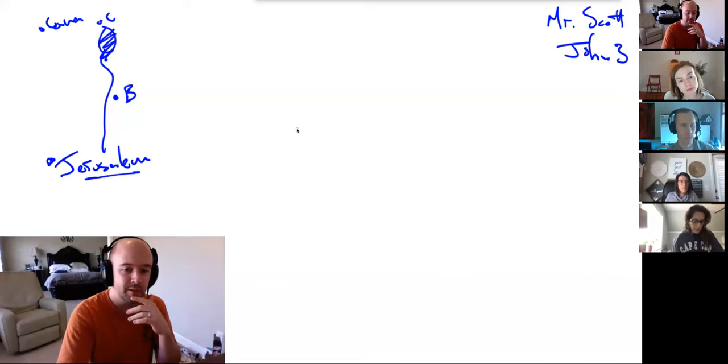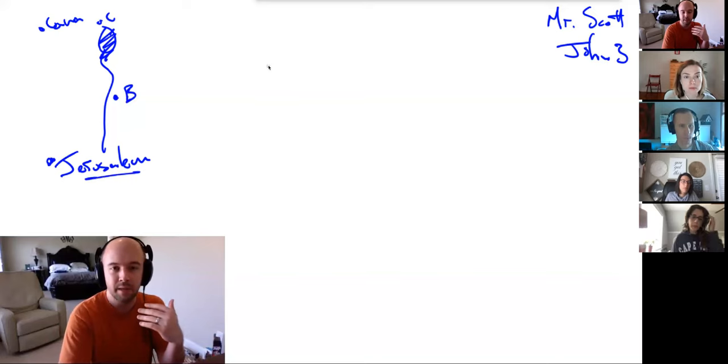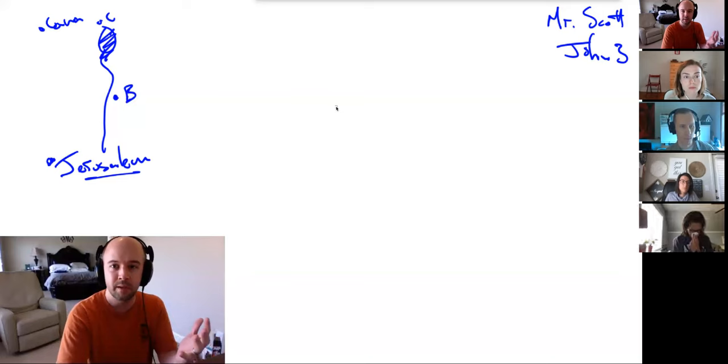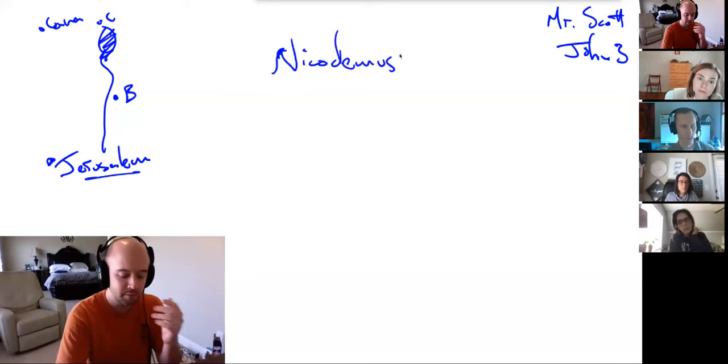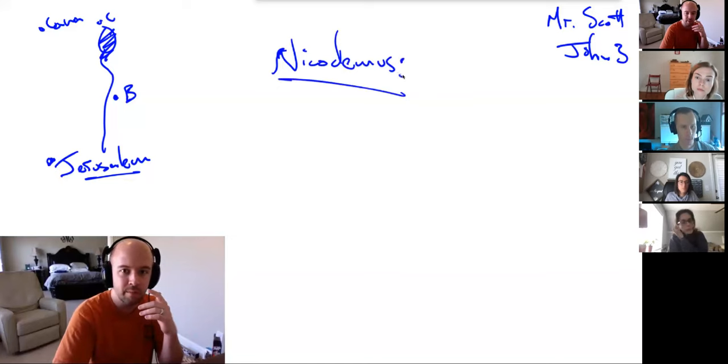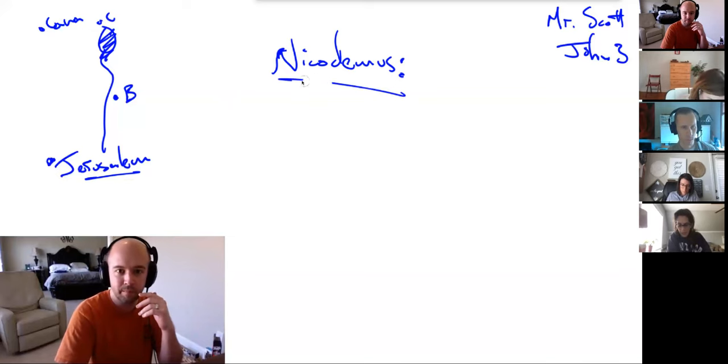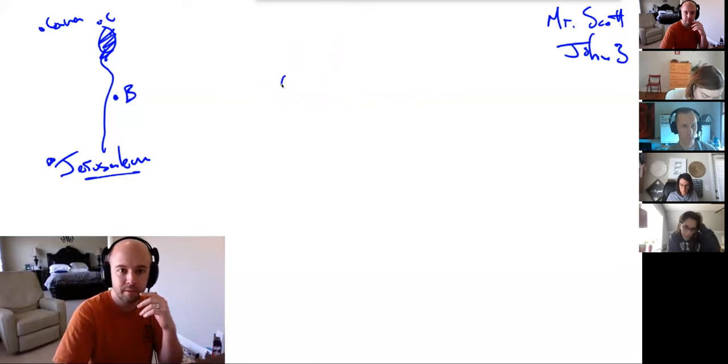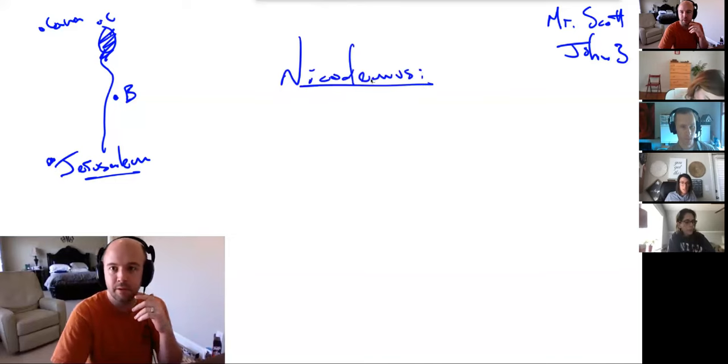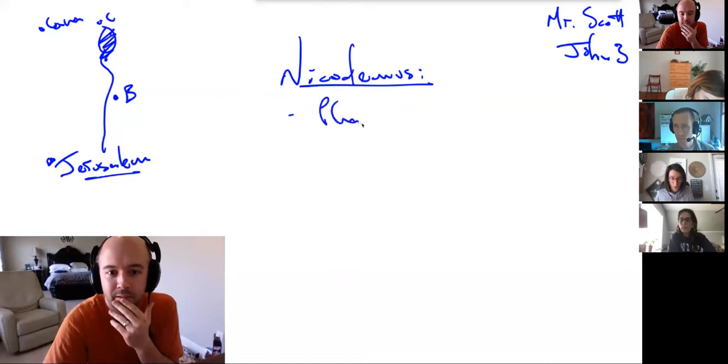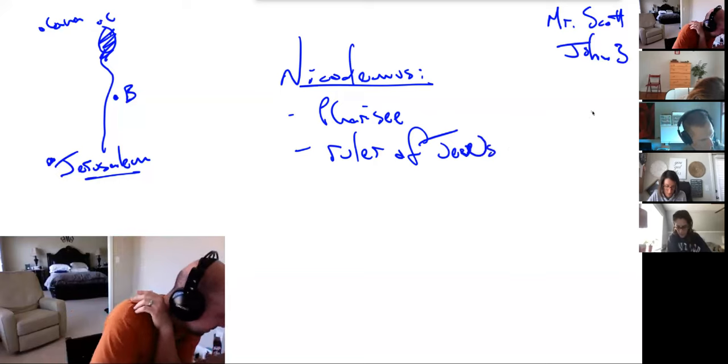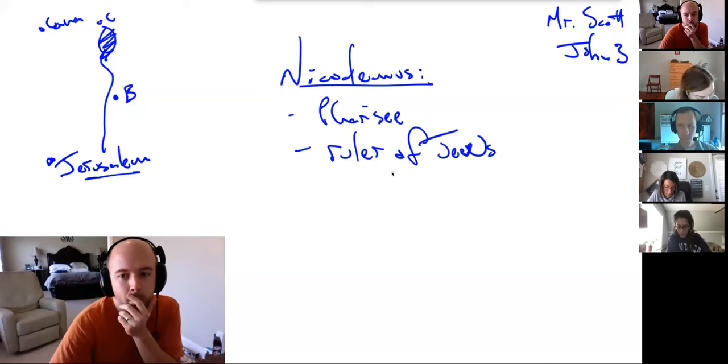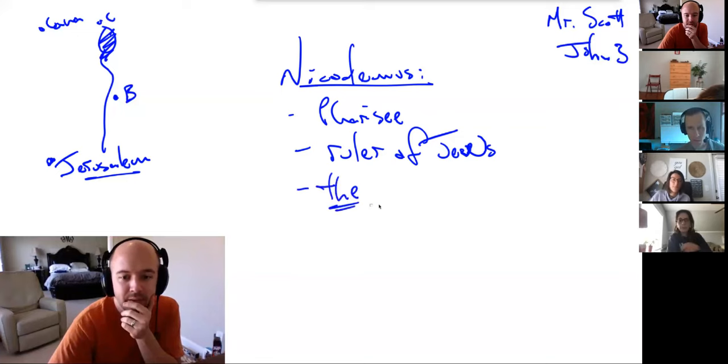Jesus is celebrating the Passover, and he's performing signs, and there were many there who believed in his name because of the signs, but he did not entrust himself to them. And then we meet this man named Nicodemus. This is a man who is in contrast to these other people that Jesus does not entrust himself to. He comes to Jesus, and what do we know about Nicodemus? If we do a little review, what do we know about him? He's a Pharisee. What else do we know about him? A ruler of the Jews. Now, there's another one that's in verse 10. What does Jesus call him? A teacher of Israel. You are the teacher. The teacher of Israel.